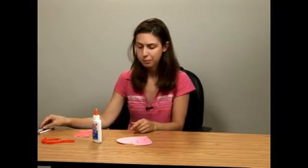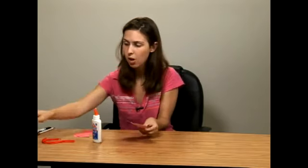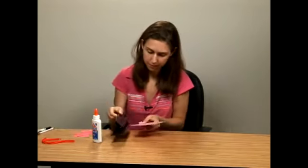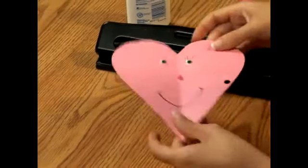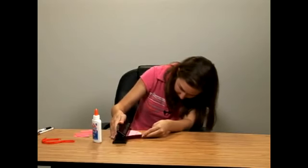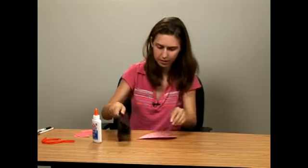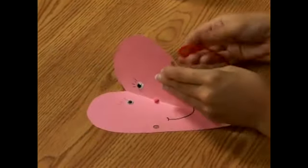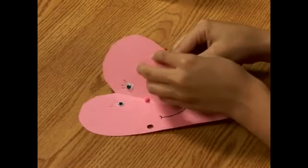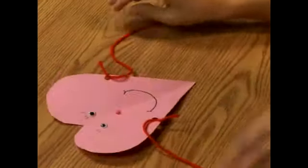Now we need to add the arms and the legs. We're going to punch a hole on either side of her heart. We're going to take a piece of yarn and tie it in each hole. Those are her arms.